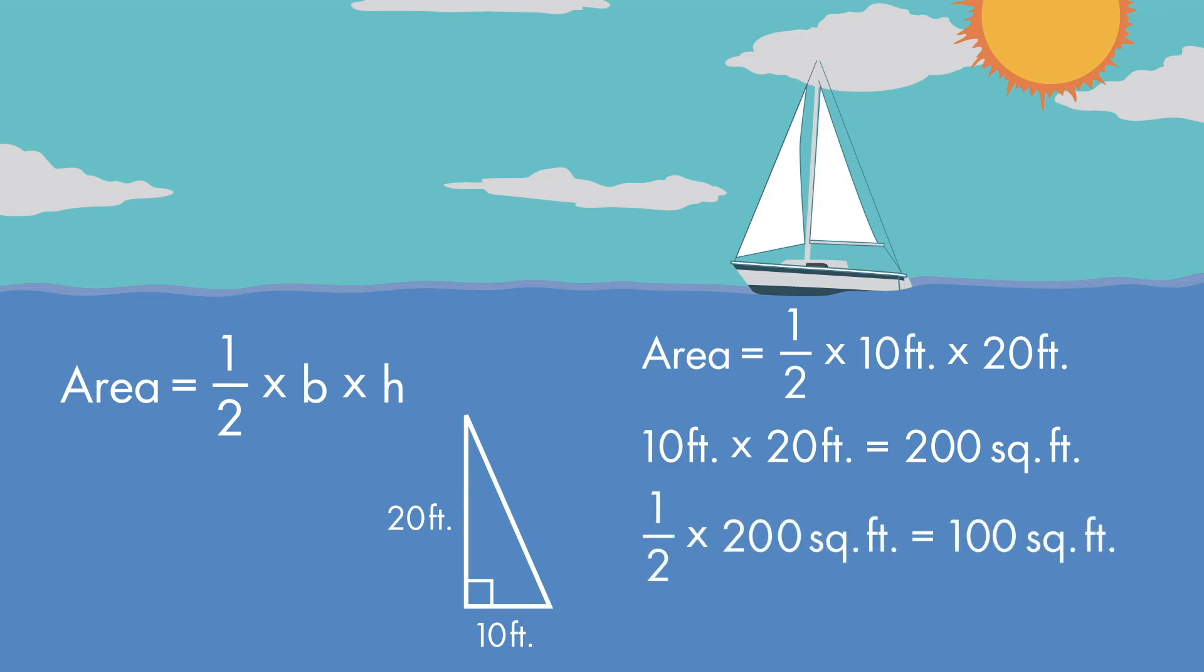One-half times 200 is equal to 100. So, the area of our sail is 100 square feet.